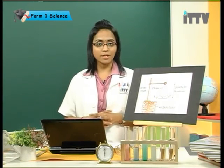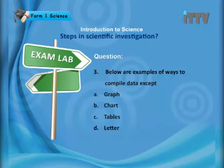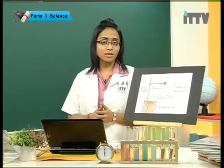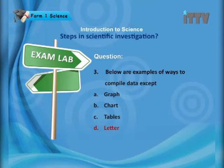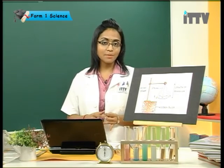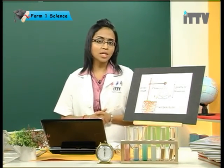Question 3: Below are examples of ways to compile data — except: A. Graph, B. Chart, C. Tables, D. Letter. The correct answer is D, Letter — a letter is not a way to compile data, while graphs, charts, and tables are ways to compile data when you carry out an experiment.